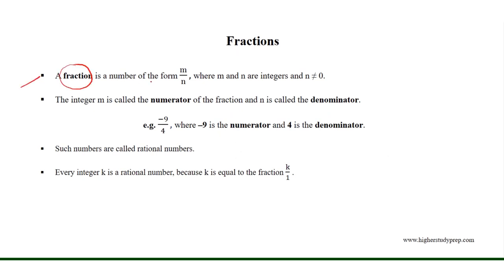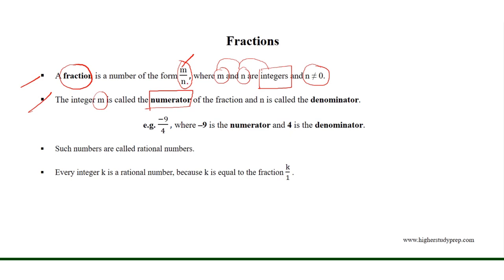A fraction is a number of the form m over n, where m and n are integers, and n is not equal to 0. The integer m is called the numerator of the fraction, and the integer n is called the denominator. For example, minus 9 over 4 is a fraction, where minus 9 is the numerator and 4 is the denominator.